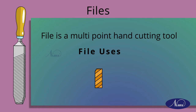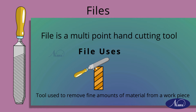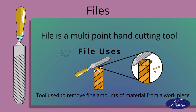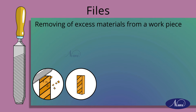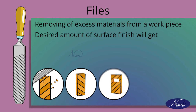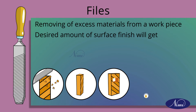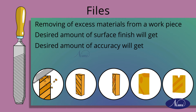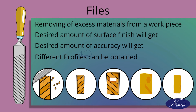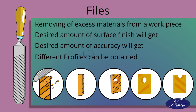What is the use of a file? A file is used to remove excess material from a workpiece. It removes very tiny, small particles of material. Number one, we remove excess material from the workpiece. Number two, we get the desired amount of surface finish — we can get the maximum surface finish as well as different profiles by using a file.